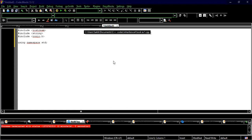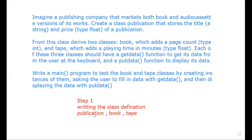We have three classes: Publication, Book, and Tape. For each of these classes, we have made a list of what variables and what functions they will have. In the Publication class we will have two variables — a string for the title and a float for the price — and two functions: getData and putData.